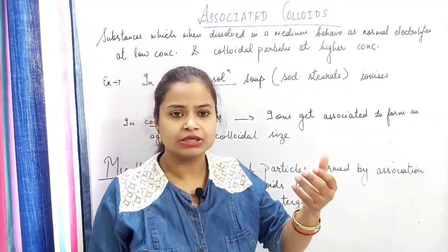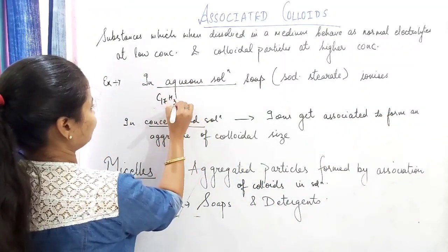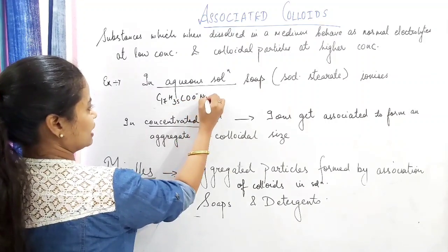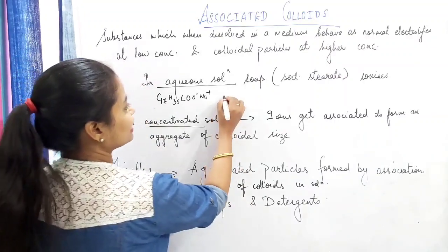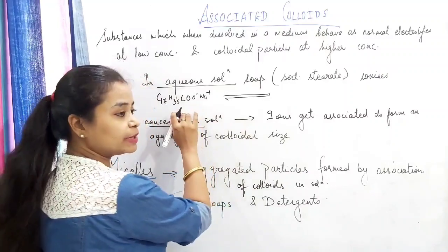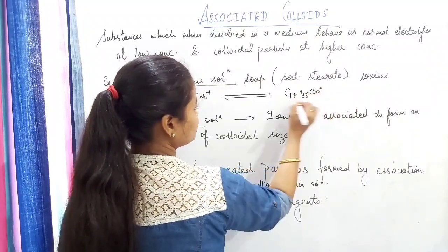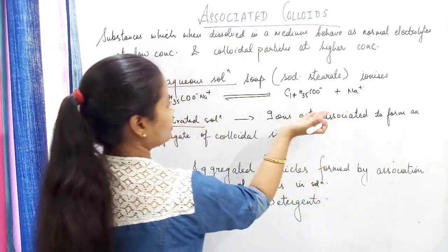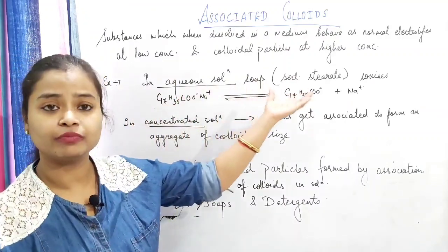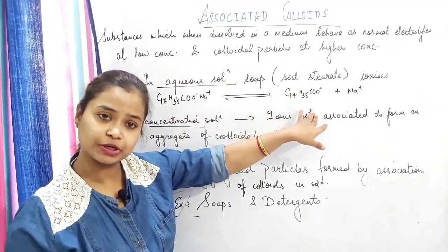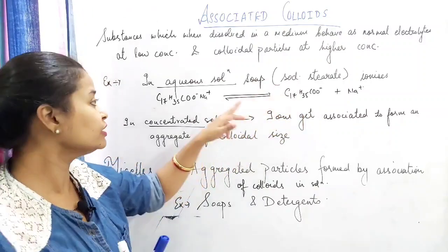Let us take one example — soap. One example of soap is sodium stearate. We know the formula of sodium stearate is C17H35COO⁻Na⁺. In aqueous solution, when you dissolve it in water, this substance has a tendency to ionize. It ionizes to give C17H35COO⁻ and Na⁺ ions, and this is a reversible reaction.